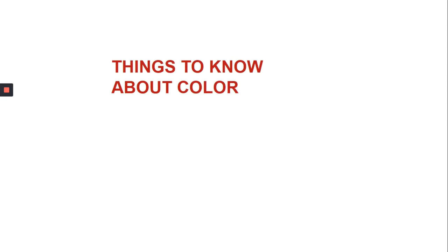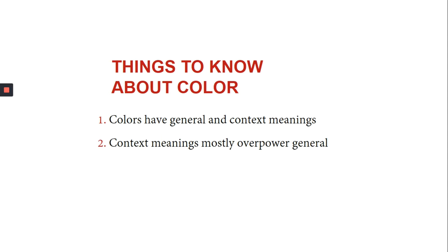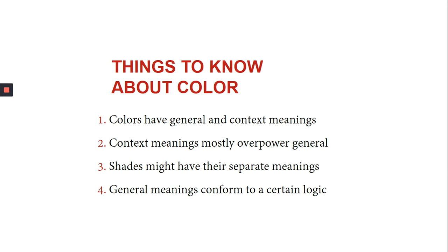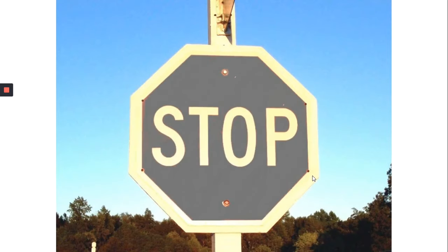Here are some things you should know about colors. First, colors have a general and contextual meaning, and contextual meanings generally overpower general meanings. Different shades of a particular color have their own meanings. And finally, the general meanings conform to a certain logic.